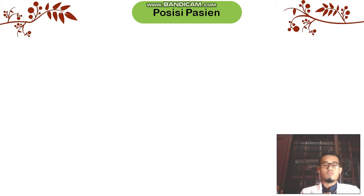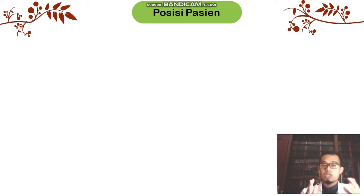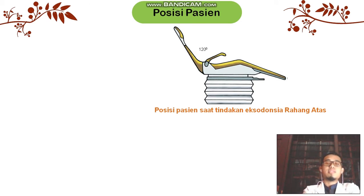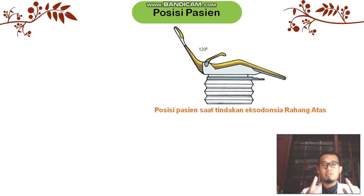Dalam melakukan tindakan ekstradonesia, pertama kali kita perlu melakukan pengaturan posisi operator maupun posisi pasien, untuk meminimalkan terjadinya cedera dan kelelahan, sehingga perawatan yang berlangsung optimal dan trauma yang terjadi diminimalkan. Terkait posisi pasien, terbagi dari dua aspek: ketinggian dan sudut kemiringan kursi gigi. Pada rahang atas, posisi rahang atas pasien sejajar atau sedikit di atas siku dokter gigi, dan sudut kemiringan sandaran pasien terhadap bidang lantai membentuk sudut 120 derajat.